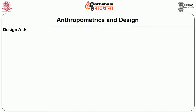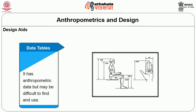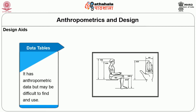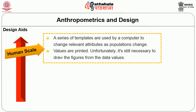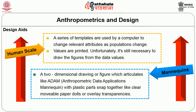Regarding design aids, there are several approaches. Data tables provide a set of anthropometric data but can be difficult to find and use. Human scale uses a series of computer templates to change relevant attributes as the population changes. Mannequins are used by fashion designers, interior designers, and furniture designers — a two-dimensional drawing or figure which articulates anthropometric data, with plastic parts that snap together like movable paper dolls or overlay transparencies.